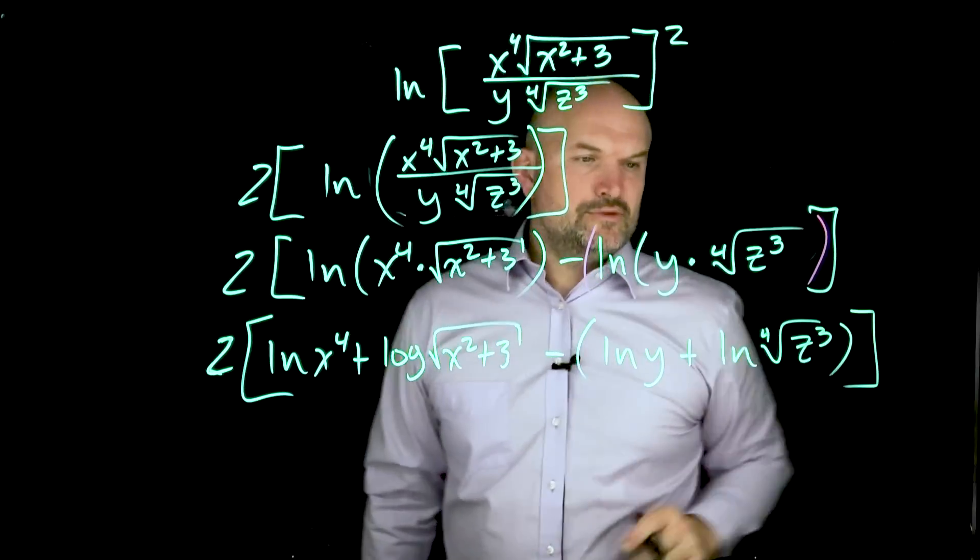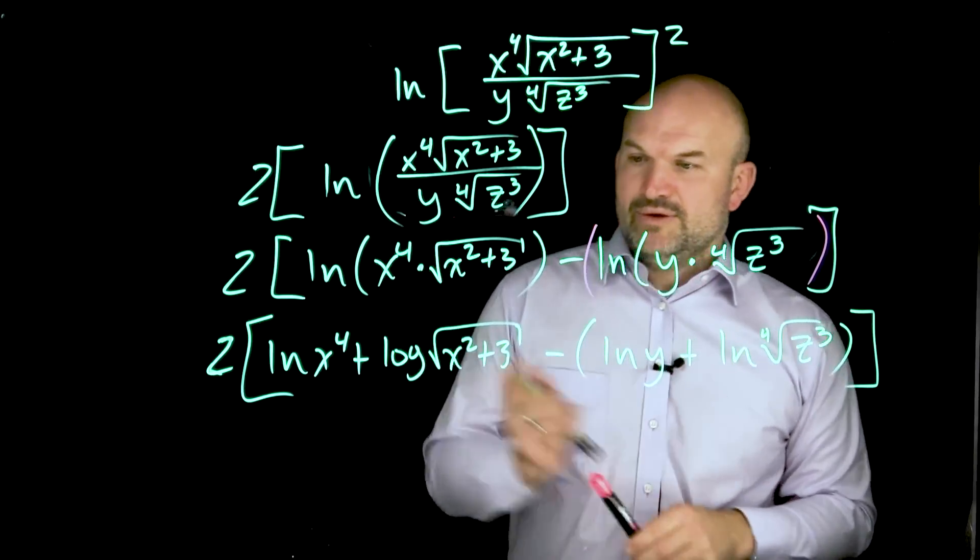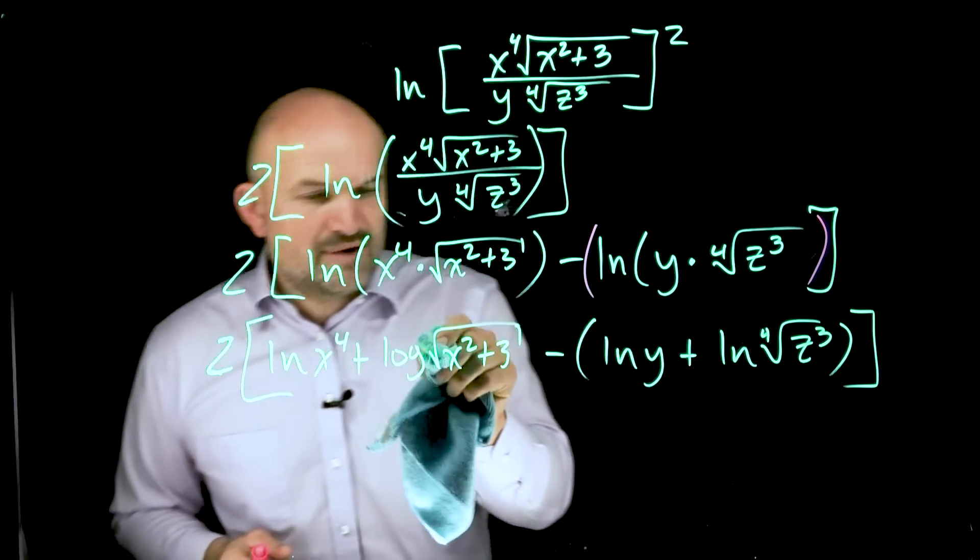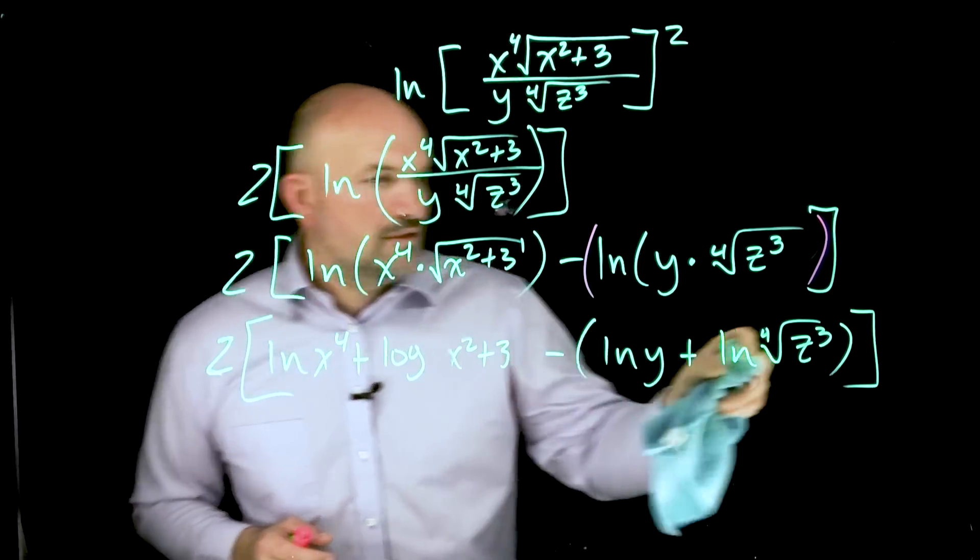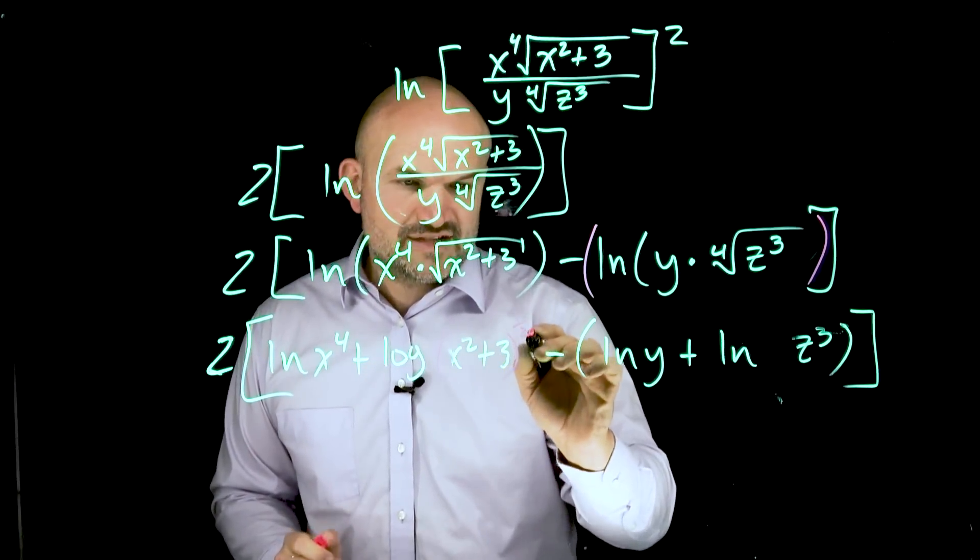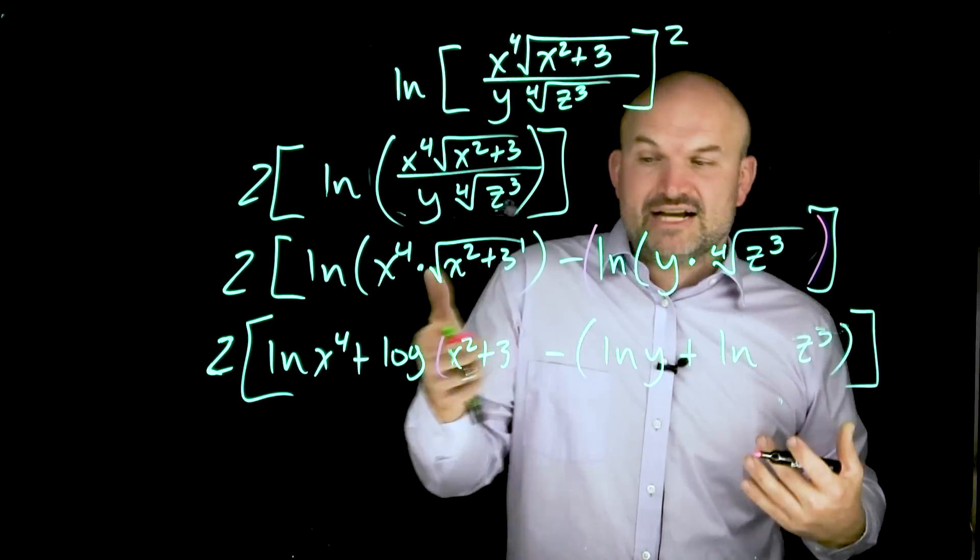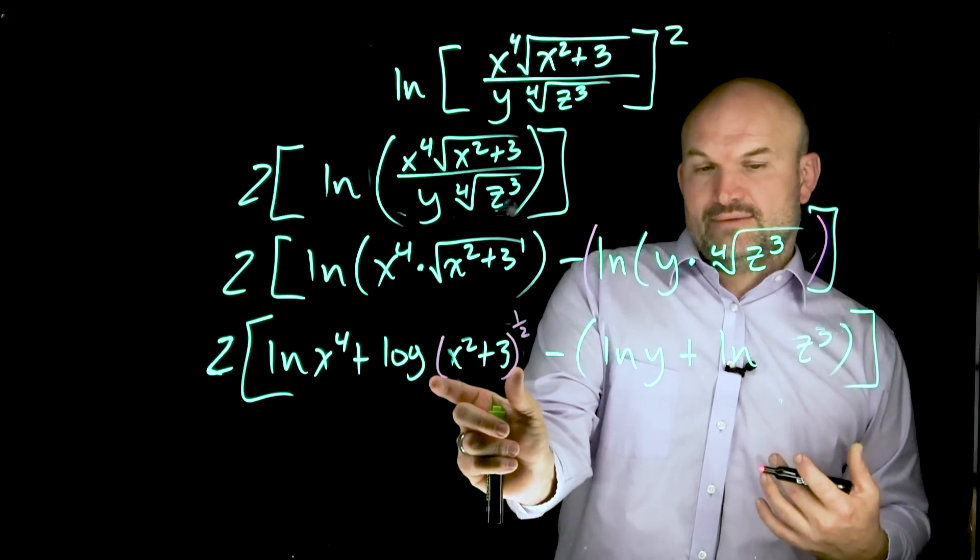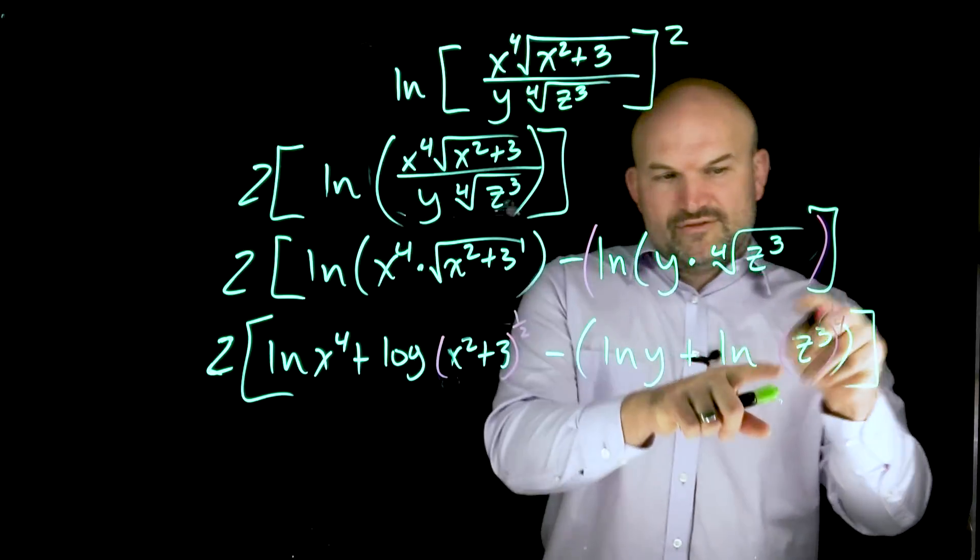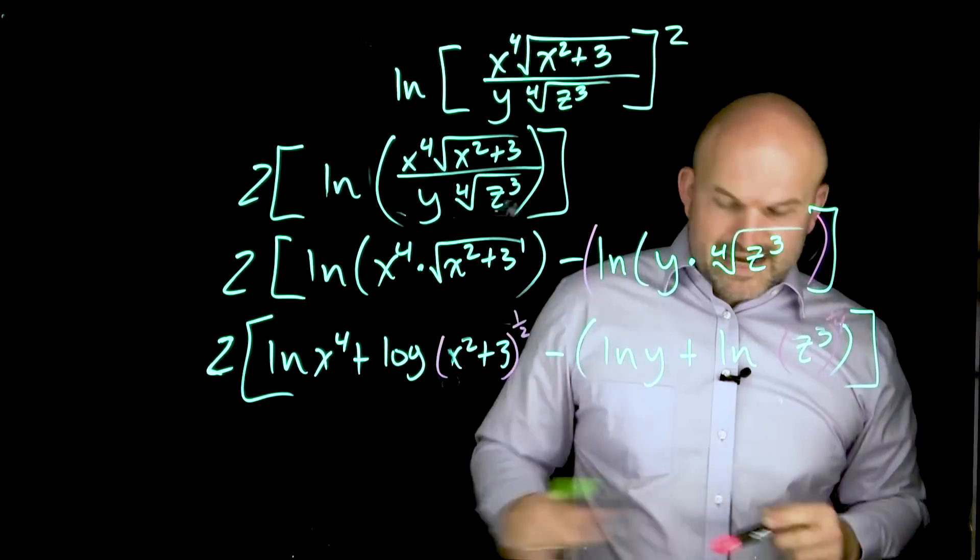So now a couple of things we can go ahead and do. We recognize here the powers. Now I don't like having the radicals in this case. I'm actually going to rewrite these as rational powers. So this one was going to be the one half. So I'm going to use a little parentheses here and rewrite that as one half. Because again, remember the whole argument, it was the square root of x squared plus three. So I got to put the whole thing in parentheses over here. And then this was raised to the one fourth power. Now one fourth times three is actually going to be three fourths, but I'll go ahead and represent that in the next line.